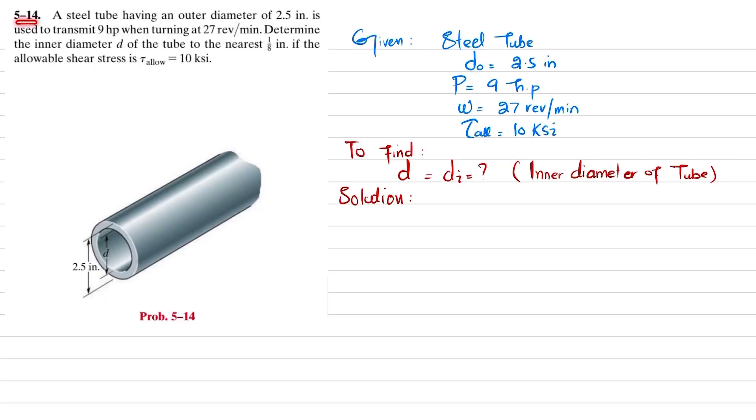Welcome back, Problem 5-14. The statement is: a steel tube having an outer diameter of 2.5 inches is used to transmit 9 horsepower and turning at 27 revolutions per minute. Determine the inner diameter of the tube to the nearest 1/8 inch if the allowable shearing stress is 30 ksi.